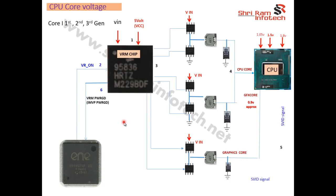Today we are going to learn about the VRM section of the laptop, also called CPU core voltages. Here we can see how the CPU gets power. This entire section is called the VRM section or CPU core section, which generates the CPU core voltage and the graphics core voltage, because the graphics chip is also inside the processor.